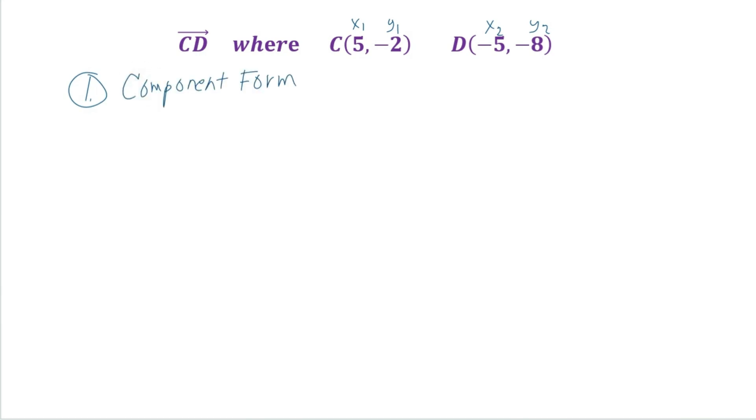So the component form is when we have x2 minus the first x, and then we have y2 minus y1. So our value for x2 is negative 5, and we're going to subtract that from x1.